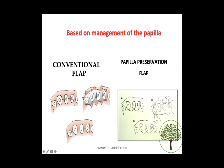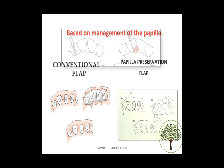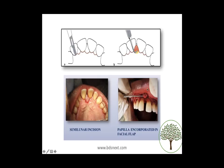Based on the management of the papilla, we have the conventional flap, where we cut the papilla in the center, or we have the papilla preservation flap, where we don't cut the papilla in the center. We include the entire papilla in one flap — the incision is given on one side and the papilla is reflected entirely. As you can see in the clinical picture, the entire papilla is reflected on one side.